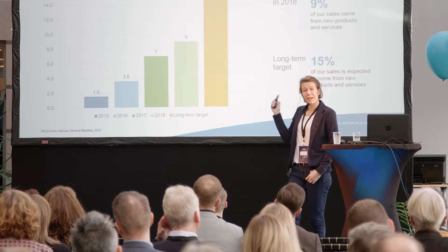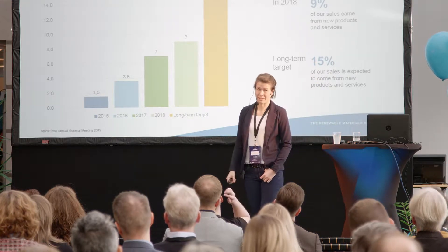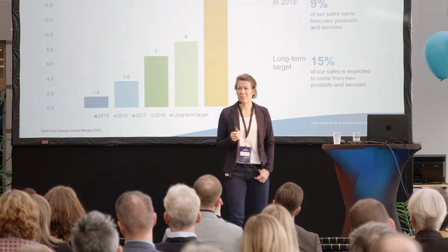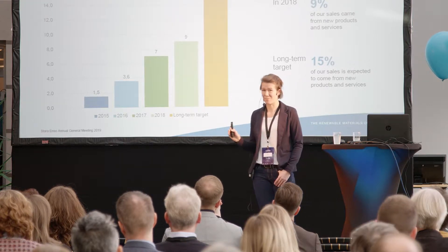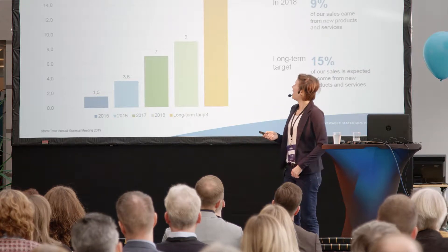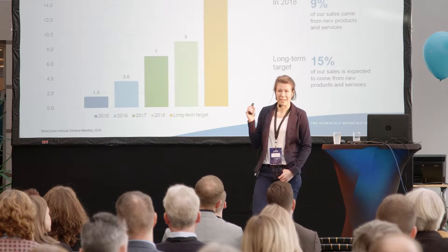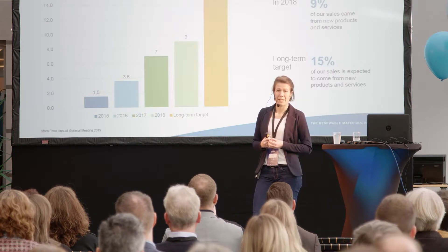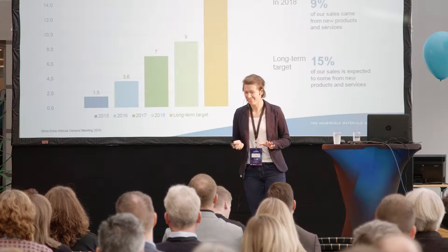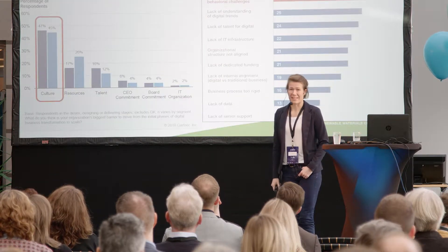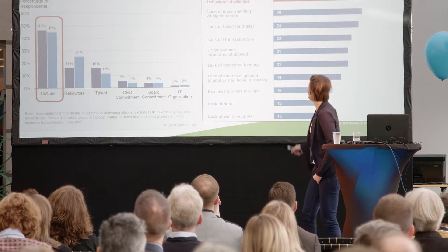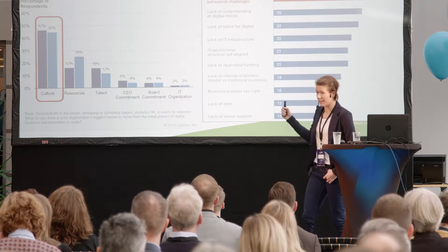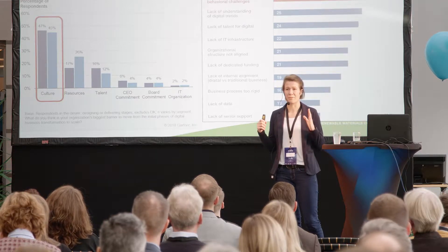So how do we achieve these targets? Stora Enso is actually quite an old company — we have roots over 700 years back, which could make a company rather traditional. That's why I claim that when a company like that starts to run its digital transformation forward, the technology is actually the easy part. It's actually the culture that is the biggest barrier to getting there. After that comes the lack of understanding of digital trends, lack of talent, and digital or IT infrastructure — but it's the culture we really need to focus on.